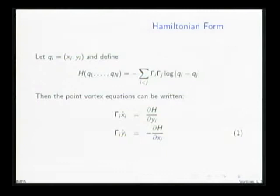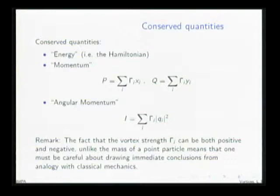It's a consequence of the fact that the vortices are advected by the velocity field of the other vortices. When studying classical mechanical systems, it's often a good idea to look for conserved quantities. The value of the Hamiltonian function is conserved along trajectories, at least as long as these vortices don't collide with each other, and we've seen examples that show that that can happen.